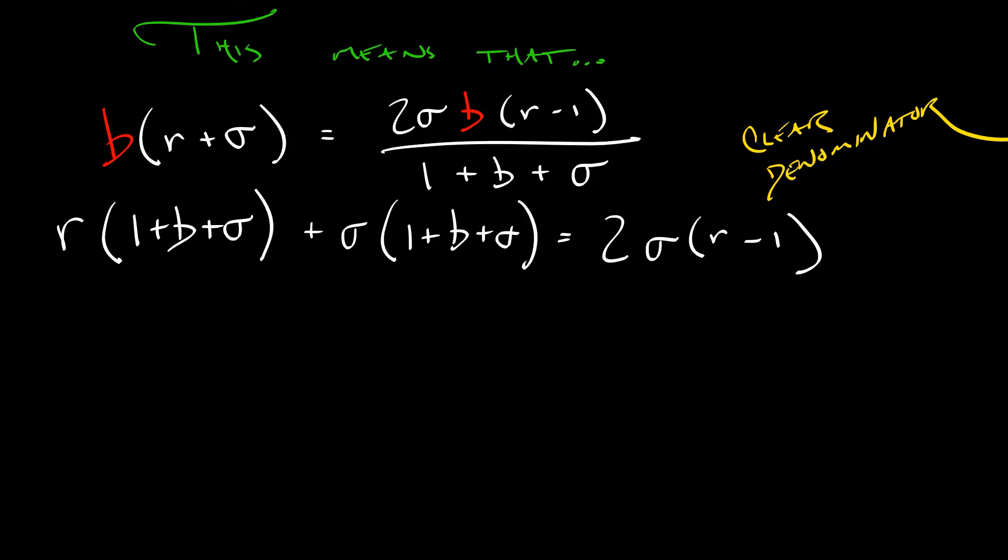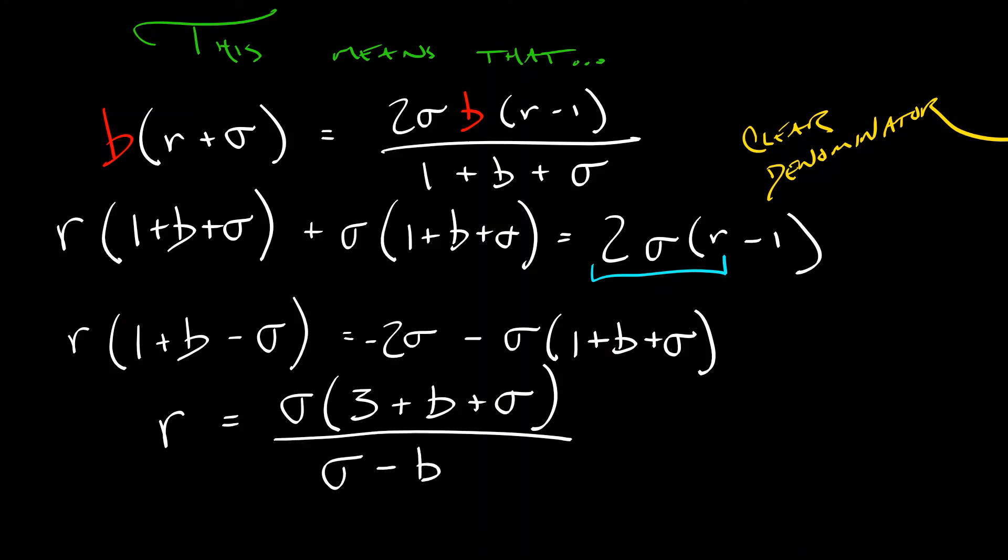Now remember, our goal is to vary r and look at that as the parameter with which bifurcations come into being. So I see that two sigma r on the right hand side. I'm going to move that over to the left hand side. And then I've got r times quantity one plus b minus sigma. Everything on the right hand side, moving stuff over, that gives me negative two sigma and then minus sigma times quantity one plus b plus sigma. If I collect terms in there and then divide out by that one plus b minus sigma, slap a negative sign in front of things to cancel some unpleasant stuff out. What we get in the end is r equals sigma times quantity three plus b plus sigma all divided by sigma minus b minus one.